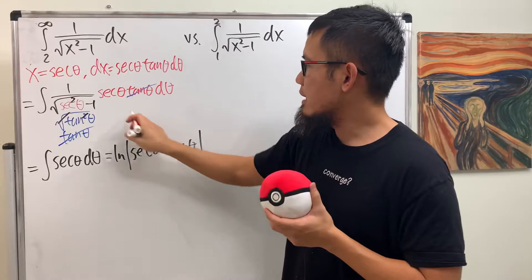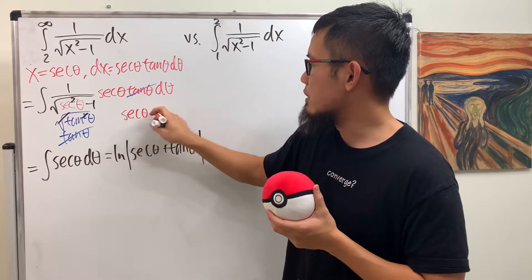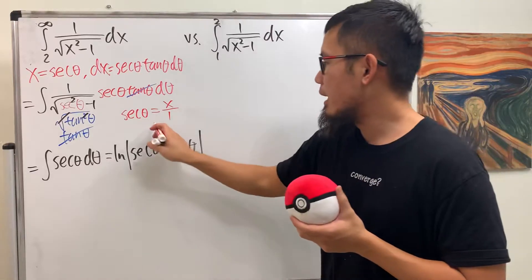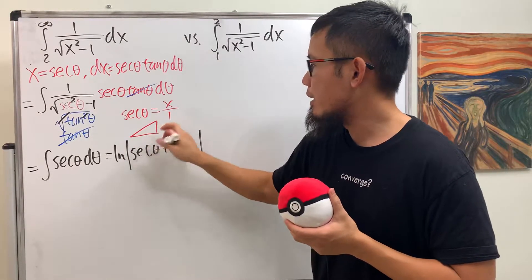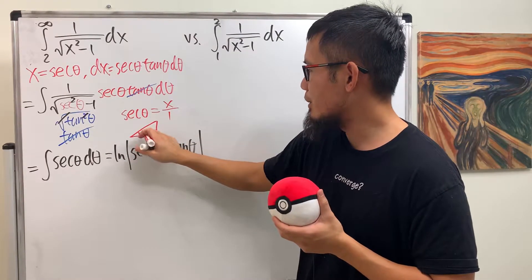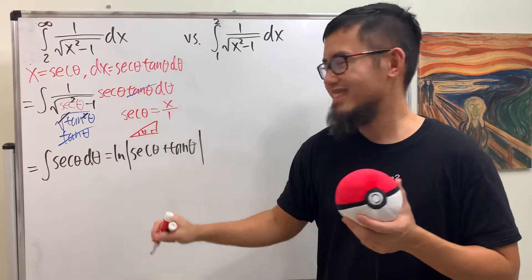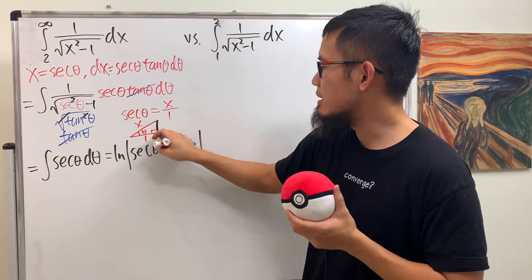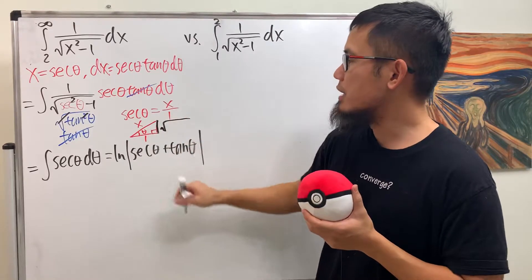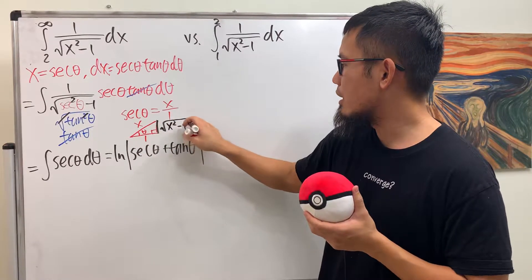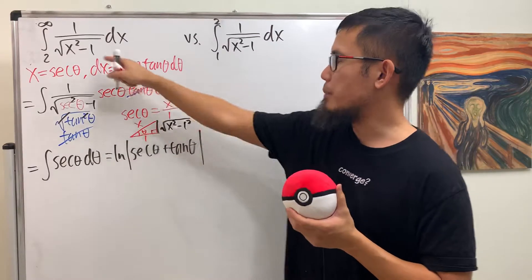Well, we know that secant theta equals x, so we can write this as secant theta equals x over 1, and then draw the right triangle. Remember, secant is, let's put down the right angle here and then the angle theta. Secant is what? Hypotenuse over adjacent, and the opposite is you open the square root first, and you do the hypotenuse squared minus this side squared. And yes, do you see the same radical again?